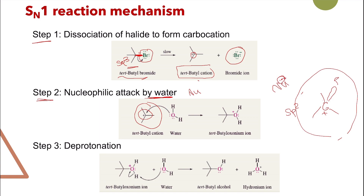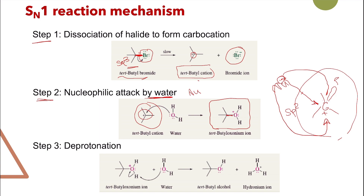Once you have this planar compound, the nucleophile can attack from any side. It can attack from this side, from the other side, or from in between. Unlike SN2, it doesn't have only one position to attack — it doesn't attack backside because the leaving group has already left. The compound is now planar, so the nucleophile will attack on any side. Depending on which side the nucleophile attacks, you will get different arrangements of the groups in space.